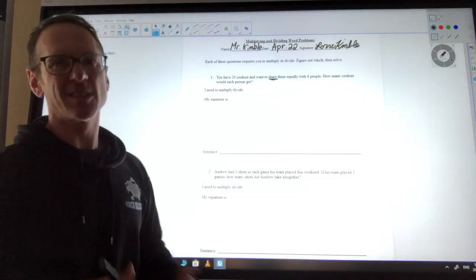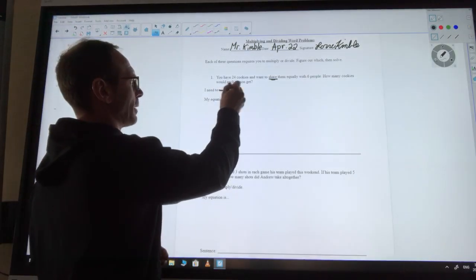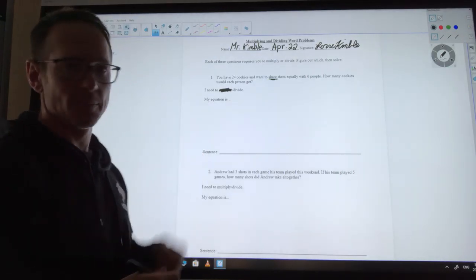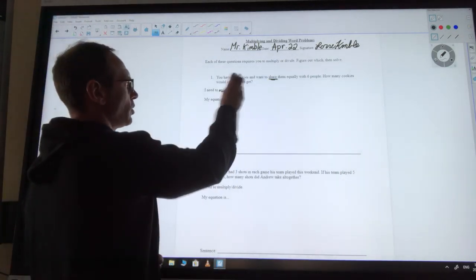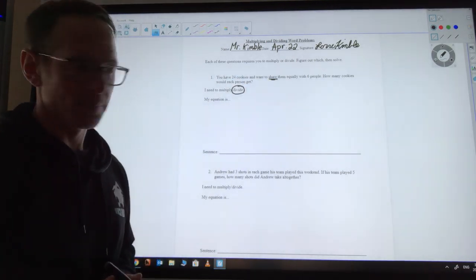Now when you're doing this step 'I need to multiply or divide,' it's a couple of choices you can do. You can just scratch out multiply and say I need to divide, or if you wanted to, you could also just circle 'I need to divide.'